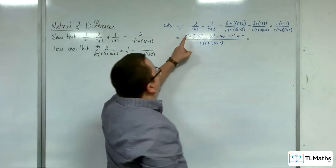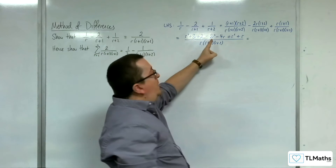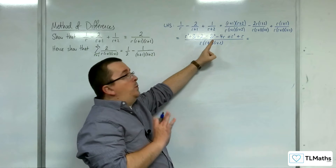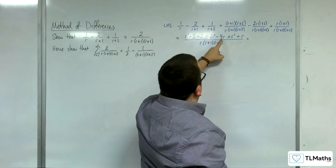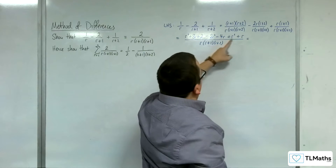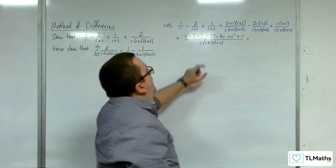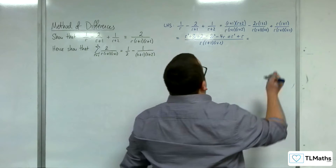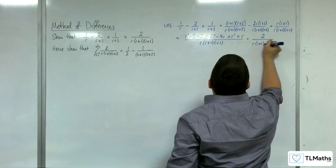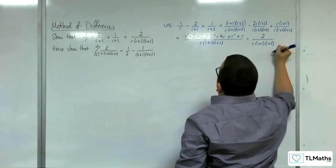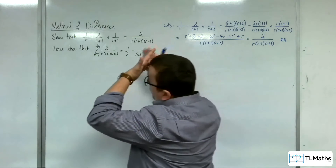So, what are we left with? Well, we've got r squared plus r squared, so 2r squared, but we're taking away 2r squared as well, so the r squareds are gone. We've got 3r take away 4r plus r, so the r's go as well. And we've got the 2 left over. So, 2 over r(r+1)(r+2) as required, which is the right-hand side.